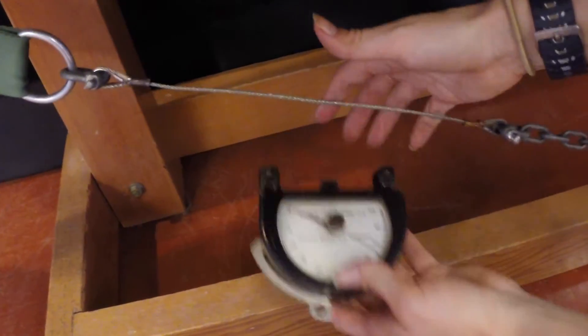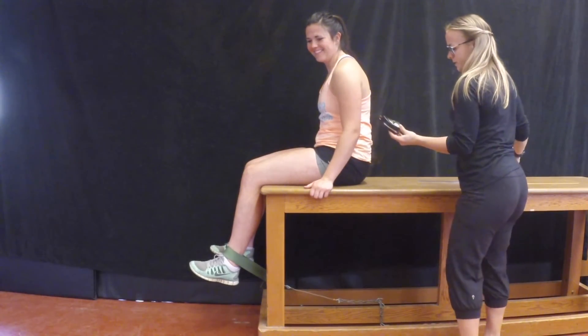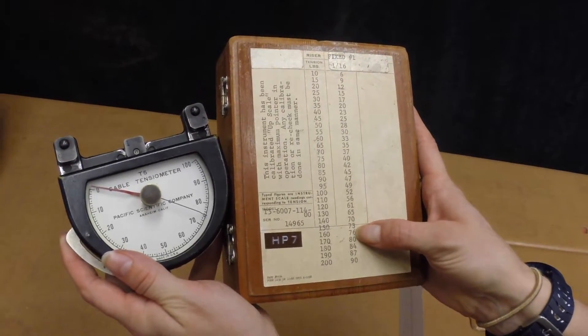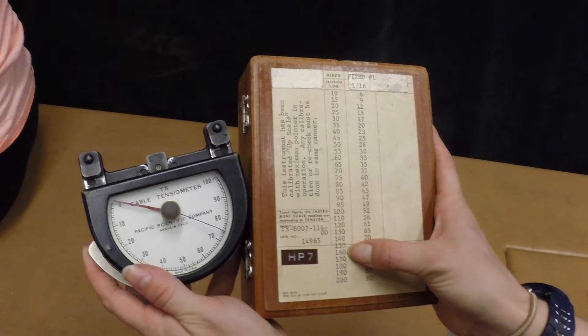This specific cable tensiometer is unitless, so compare it to the table on the box to determine your client's results. In this case, the client achieved a 76 which is equivalent to 160 pounds.